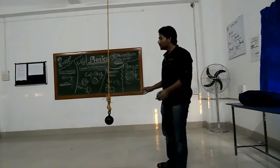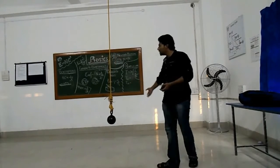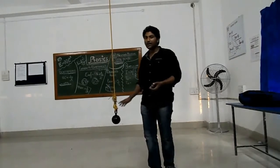To demonstrate this, first we need a pendulum that we have over here. Now we will tilt this by an angle of around 10 to 15 degrees and measure the time period.